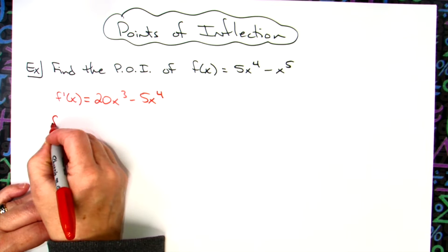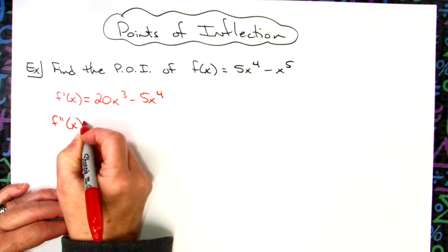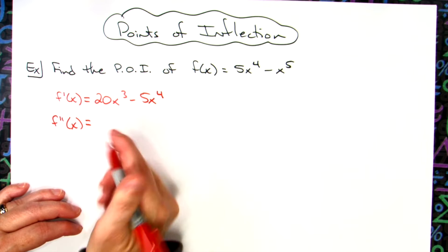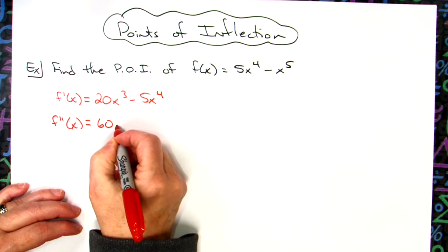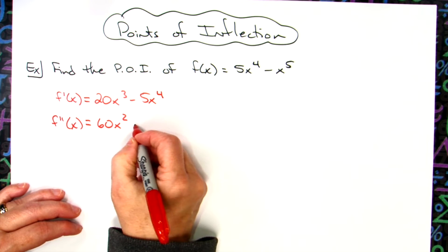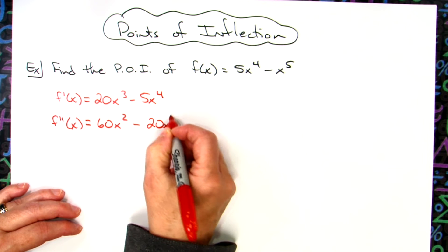Then we're going to find our second derivative. Again, polynomial curve, so pretty straightforward here. It's going to be 60x² - 20x³.